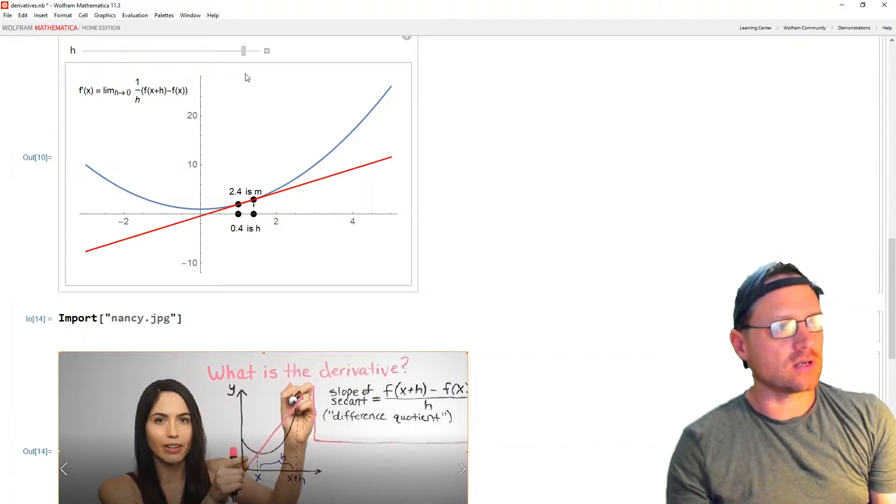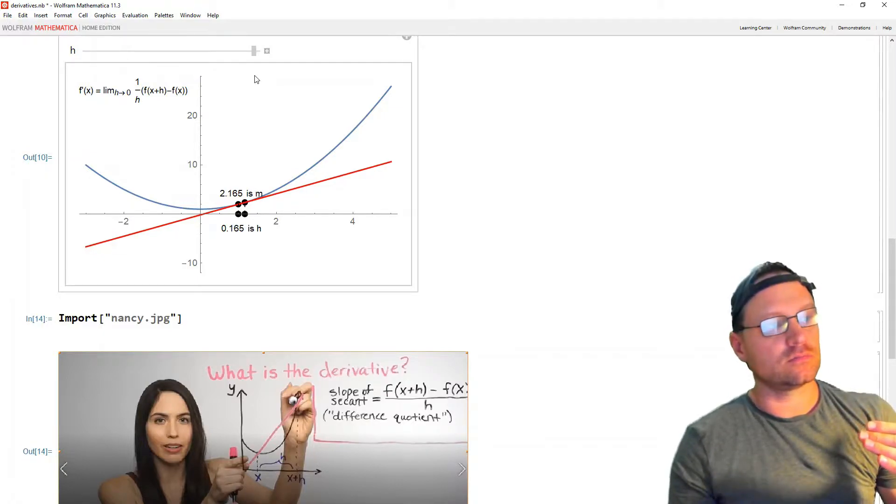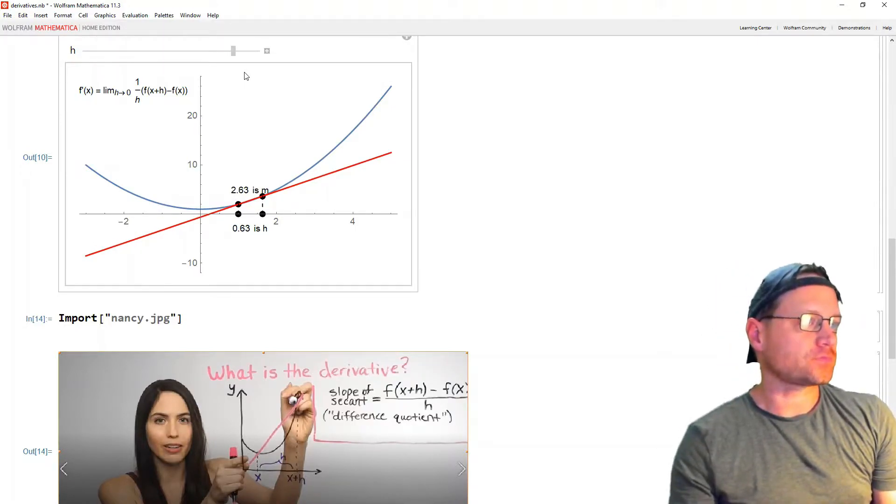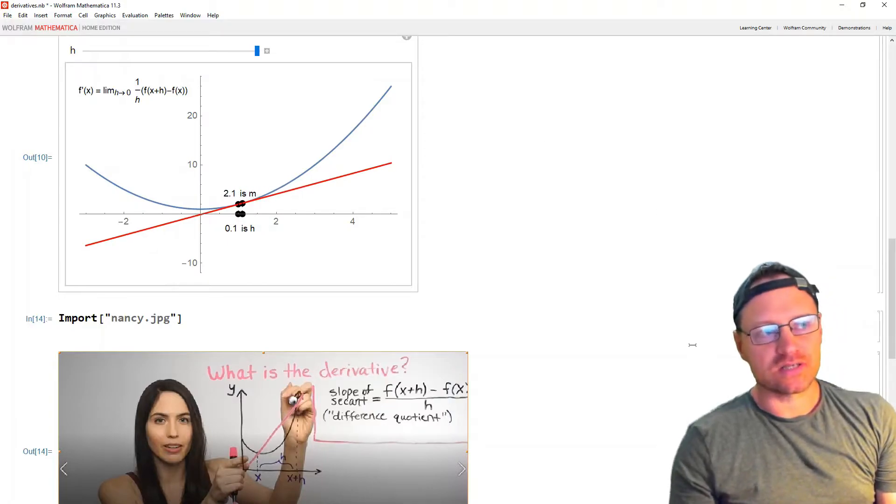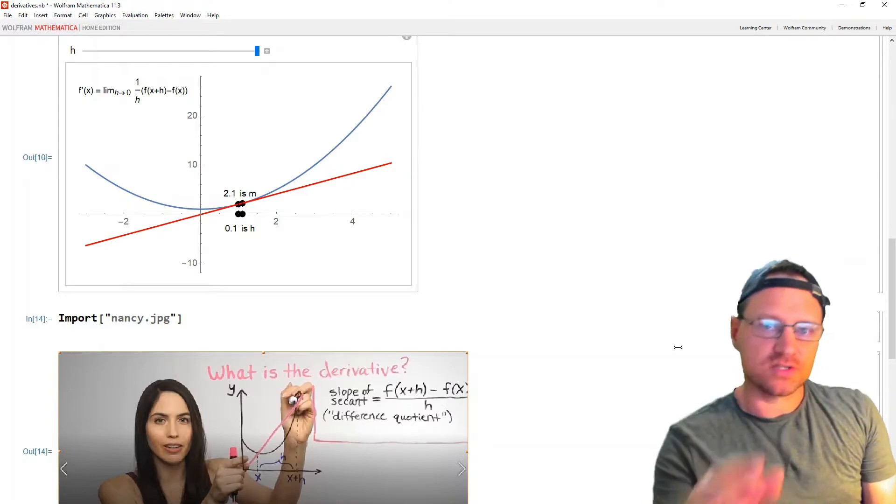Now you can see what's happening to the slope of that tangent line. It's approaching the actual slope of the tangent. The slope of the secant is approaching the slope of the tangent. But I'm here to tell you how to produce this diagram so you can use that in your teaching.